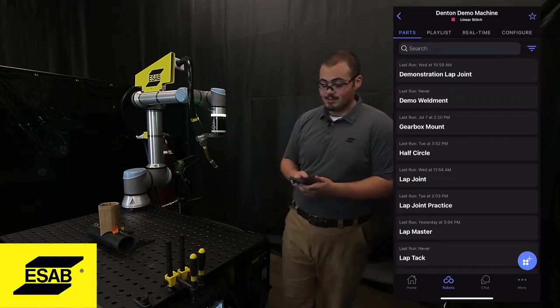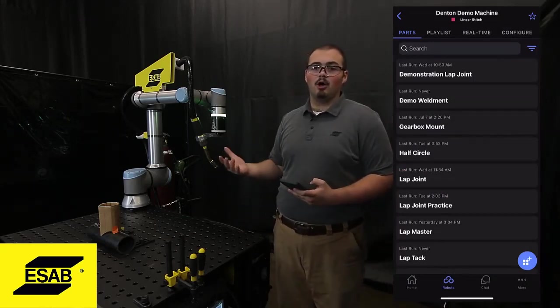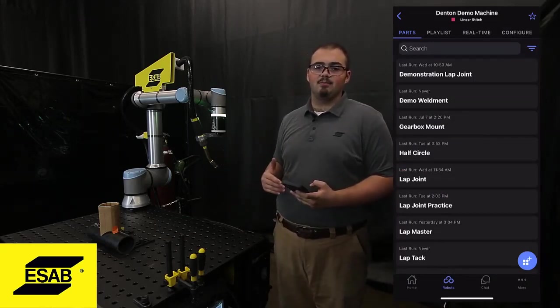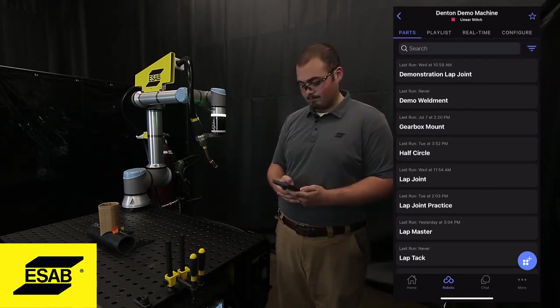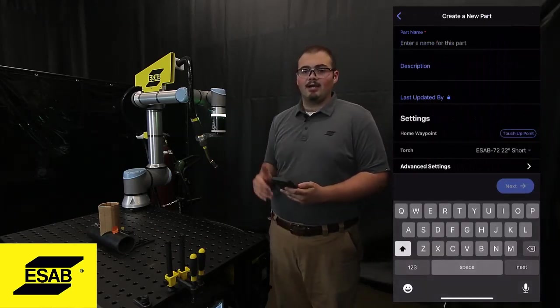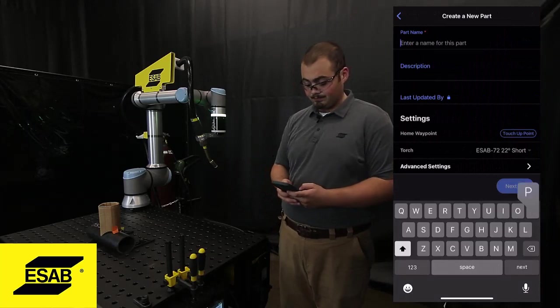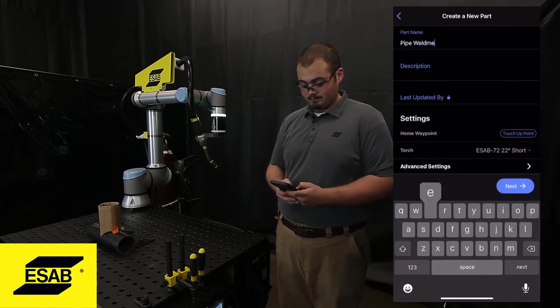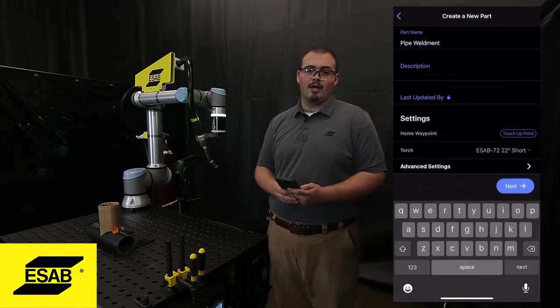So I'm going to start in my app by making a new part, and to do that I press the blue icon in the bottom right corner. I can go ahead and name my part, then click next.